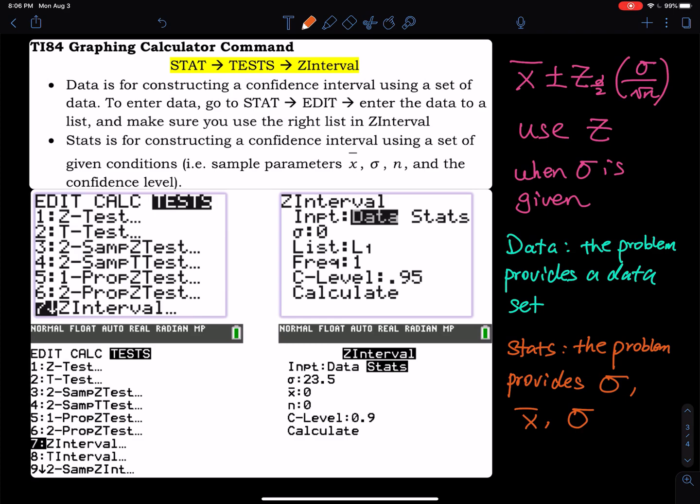The result gives you a lower limit and an upper limit. By the way, for the Data option, you do have to input the data. Where do you input data? Go to STAT, then EDIT—not TEST. Go to STAT, then EDIT, and you can enter your data there.